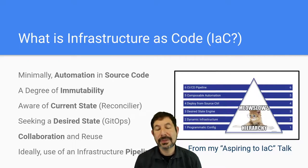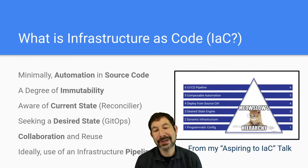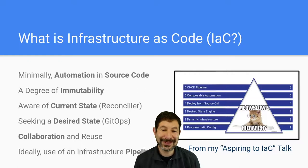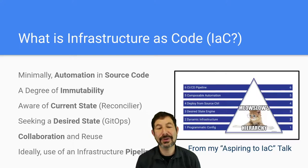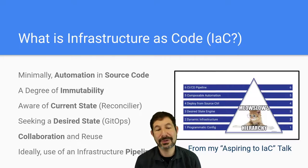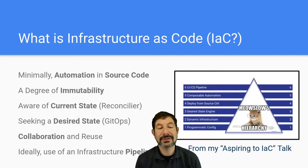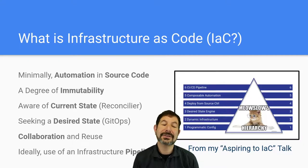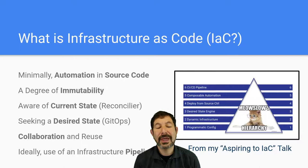The thing about infrastructure as code is that everybody sees something different in it. I explored this in another topic called 'Aspiring to Infrastructure as Code,' where I decompose infrastructure as code into six key areas: using source code, having immutability, being aware of current state, seeking desired state, collaboration and reuse, and then using an infrastructure pipeline.